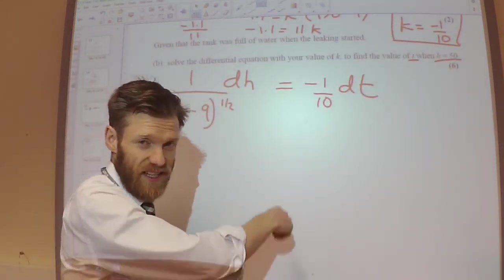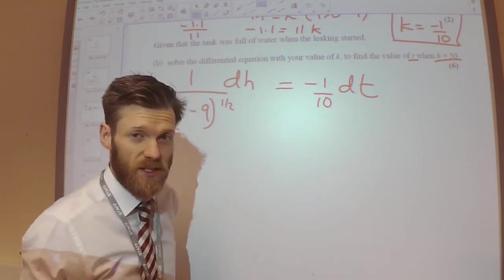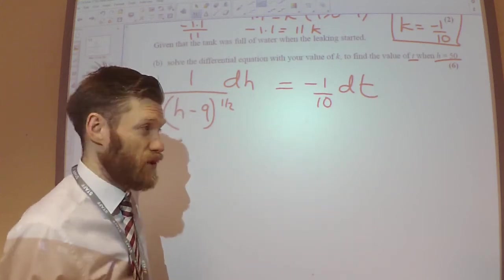So I might put the K as minus 1 over 10 here. Or you might decide to leave it until later on and then substitute the minus 1 over 10 in. It's up to you, really.